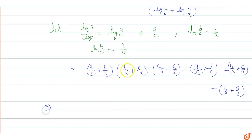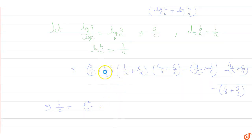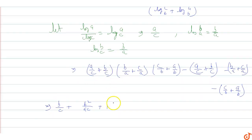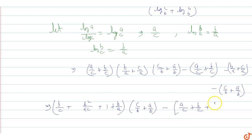Now multiplying out: a/c into b/a gives b/c, plus b/c, plus b²/ac, plus a/c into c/a is 1, plus b/c into c/a, plus b/a into c/b, plus a/b. Minus the subtracted terms: a/c plus b/c plus b/a plus c/a plus c/b plus a/b.